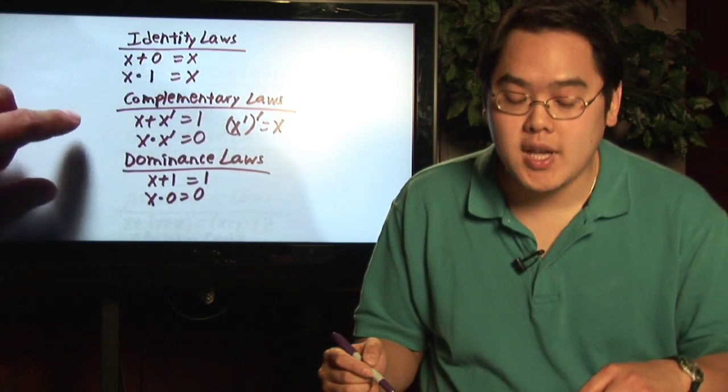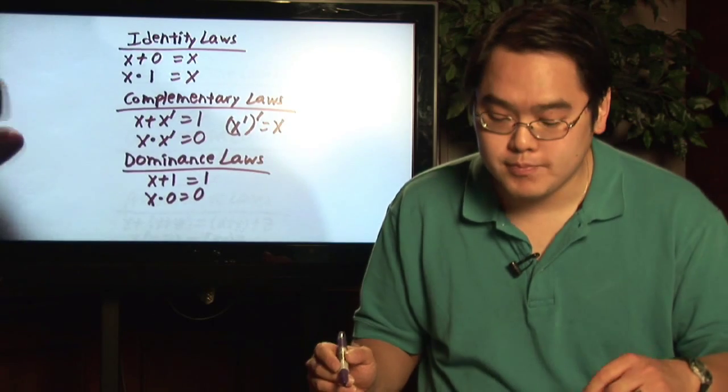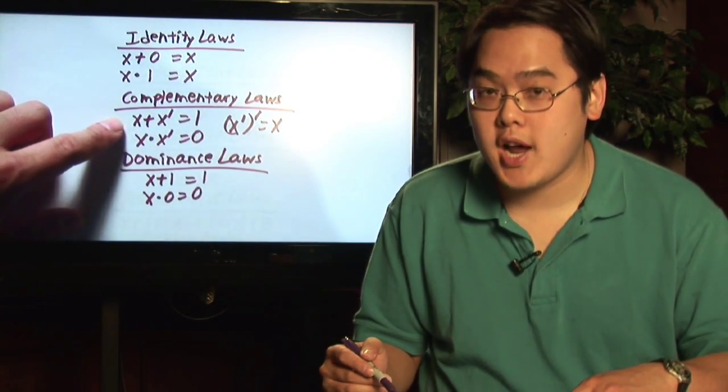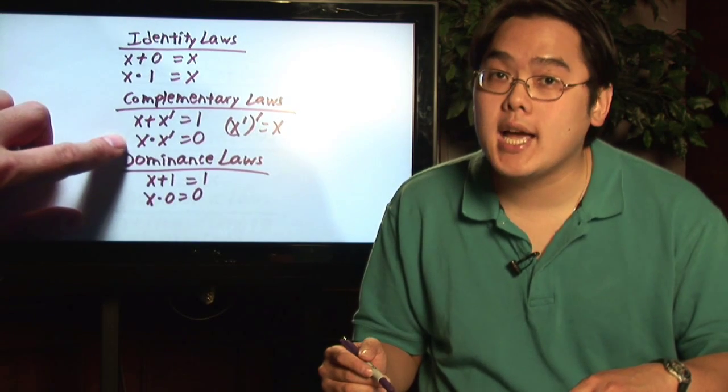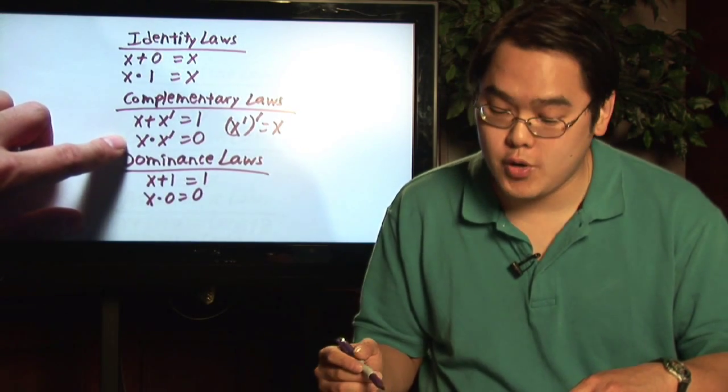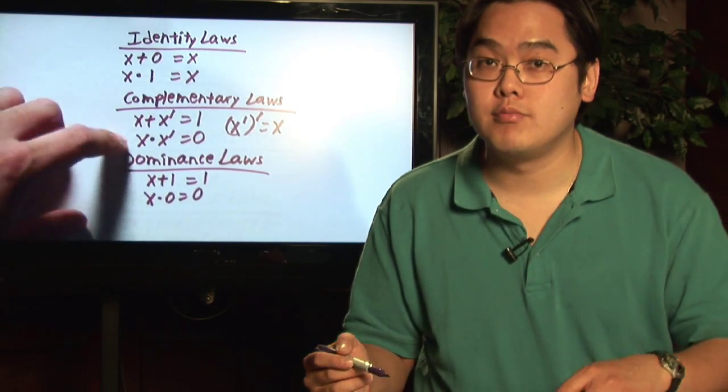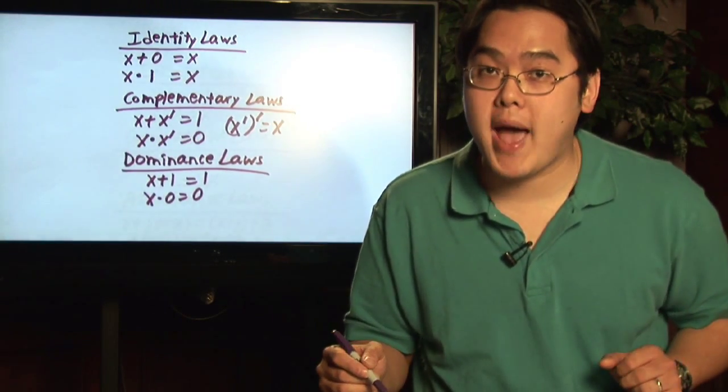And then you get to the complementary laws, those involving the complement symbol. Now, remember X plus X prime is equal to one, X times X prime is equal to zero. And then we have X prime of prime. So the prime of X prime that gets you back to X.